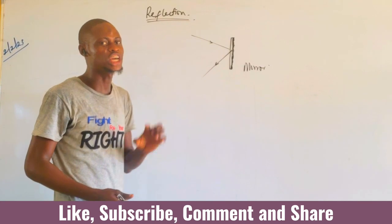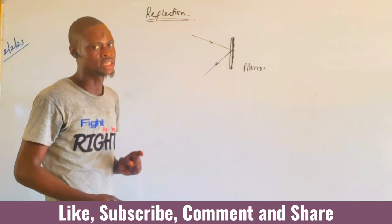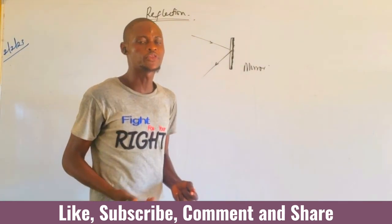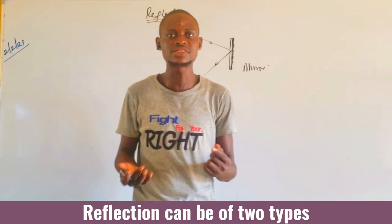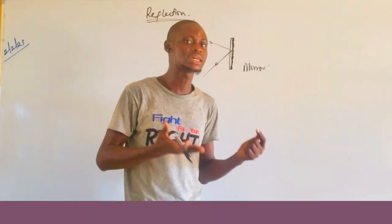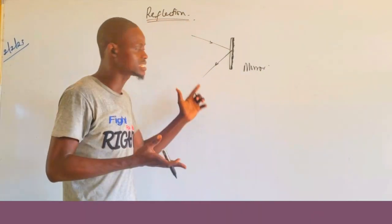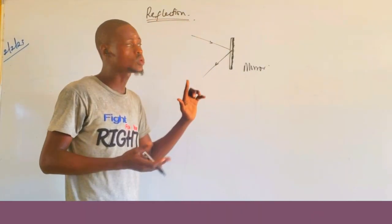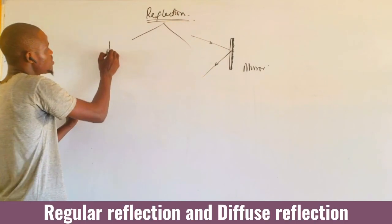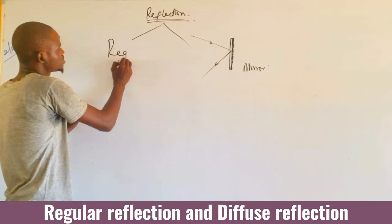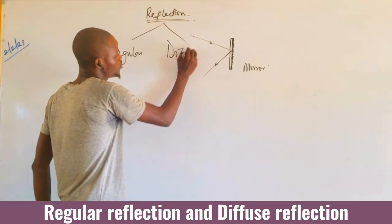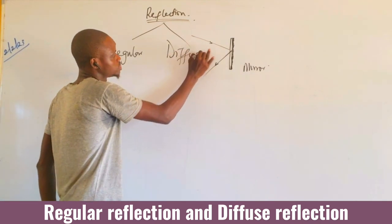Reflection can be of two types, depending on the kind of material or substance that the light is meeting. Reflection can be classified into two: we have what we call regular reflection, and we have what we call diffuse reflection.